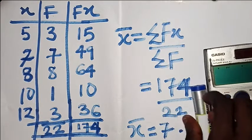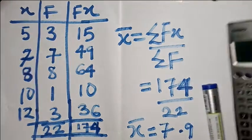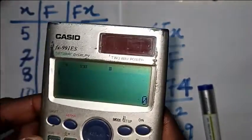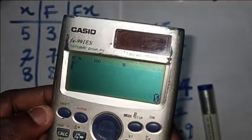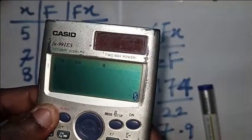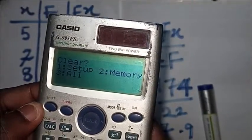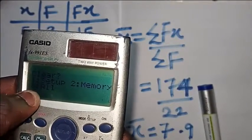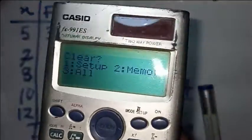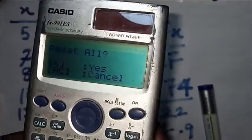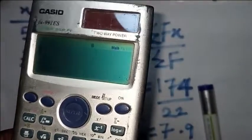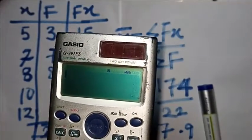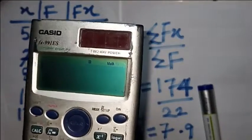The first thing to do is clear your calculator. To clear the calculator, click Shift and 9. You'll see options: clear setup, memory, and also click on 'All'. Click on 'All', then press equals twice. You've now successfully cleared your calculator.